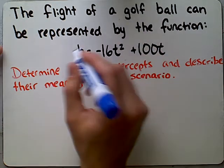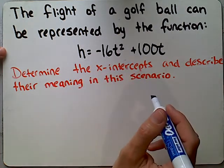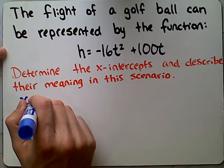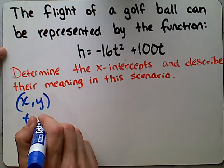So what we're going to do is we're going to take our function here, and when we're looking for x-intercepts, what we're looking for are y-values of 0. So in this case, instead of having a traditional x and y, we have instead a t and h.